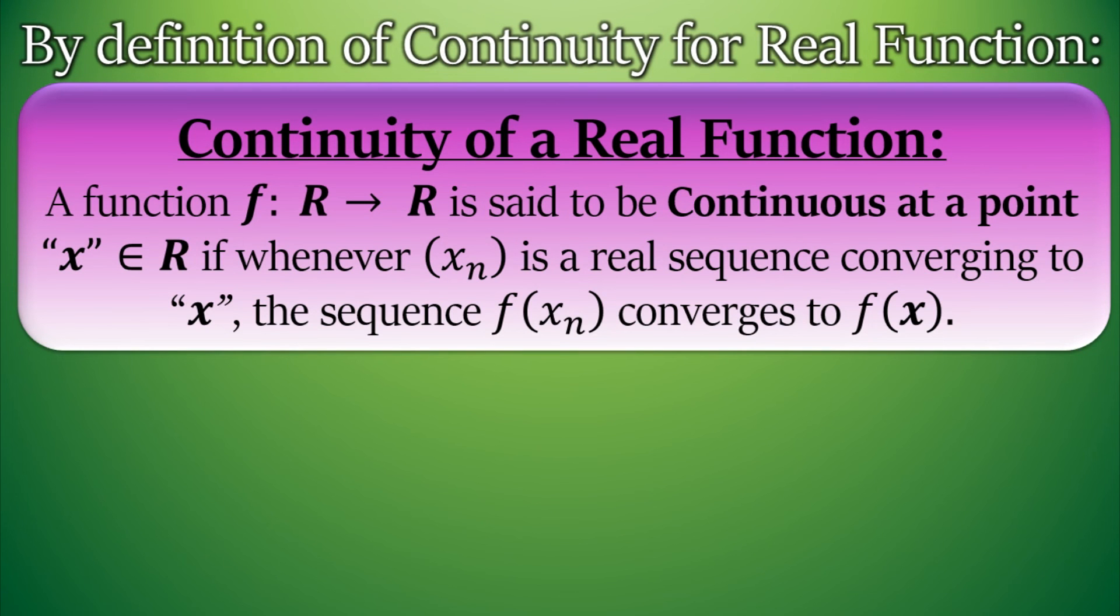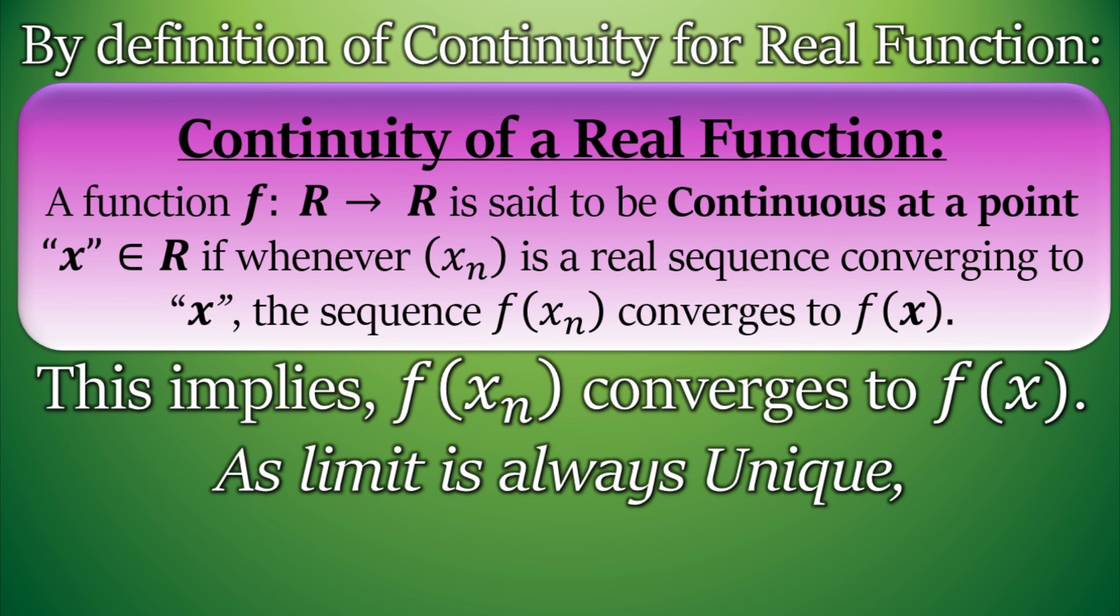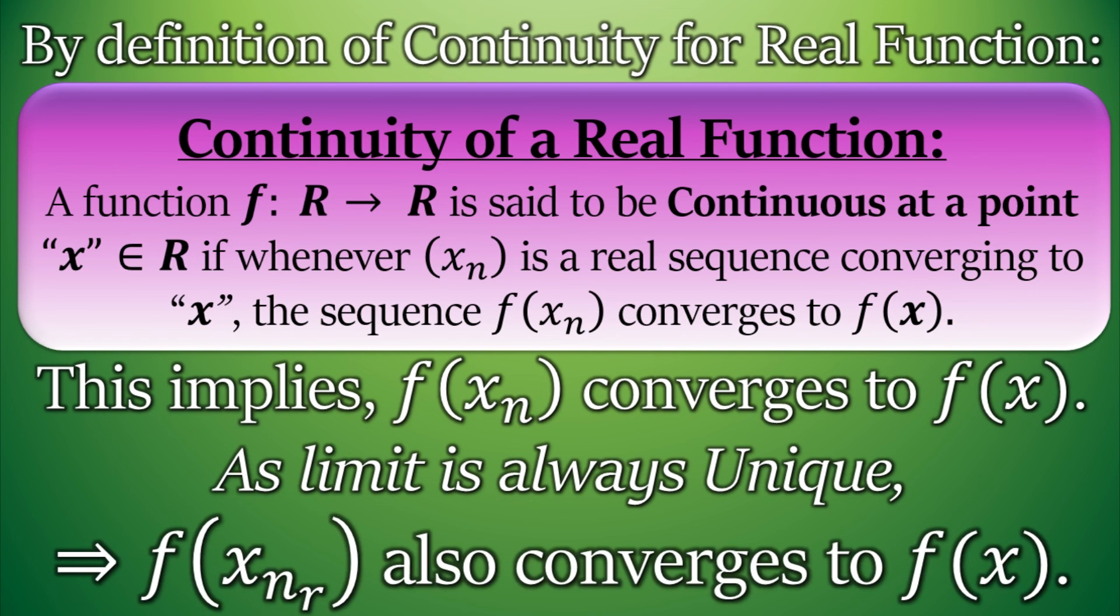Now let's see how we will apply this to our proof. By definition of continuity, we have established that f(xₙᵣ) converges to f(x). We also know that the limit of a sequence is always unique, so this shows that the limit of f(xₙᵣ) is also f(x).